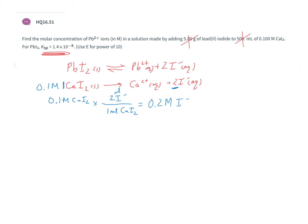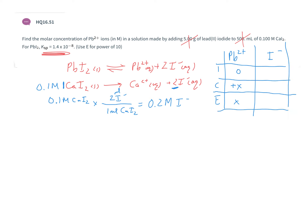Now we set up our ICE table. For lead 2+: initial is zero, change is +x, so at equilibrium we have x. For iodide: we already have 0.2 molar from calcium iodide. When equilibrium is reached, we add 2x more iodide from lead two iodide, but that 2x value can be ignored — it's too small. So at equilibrium, iodide is effectively 0.2 molar.